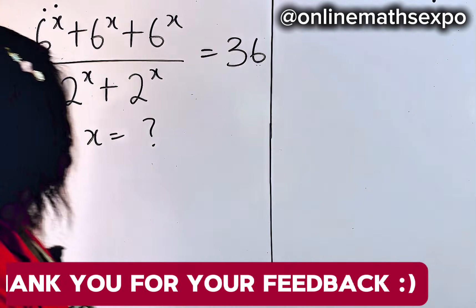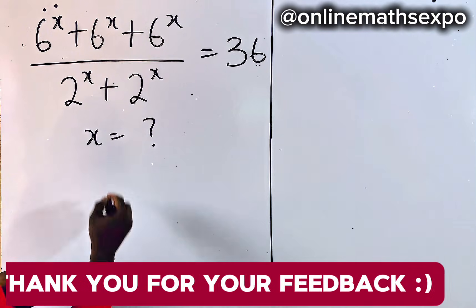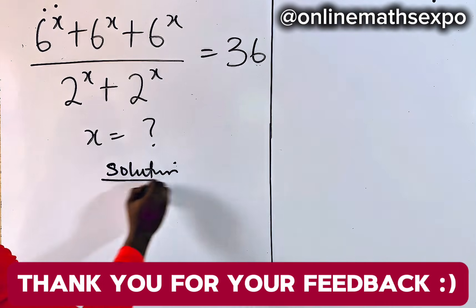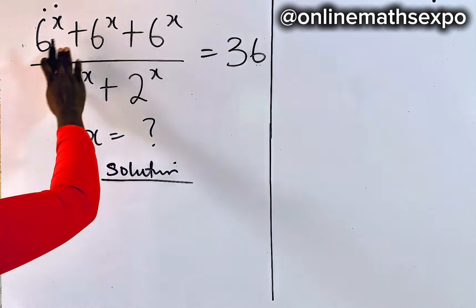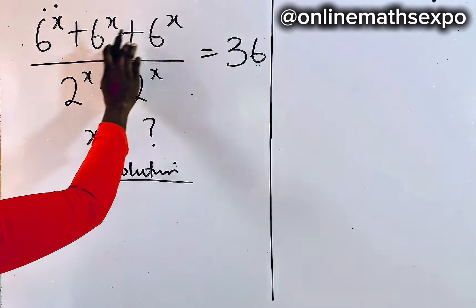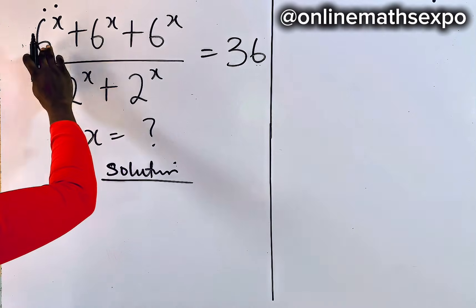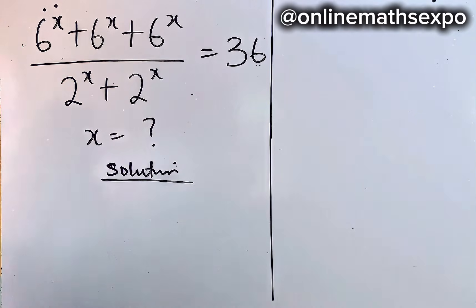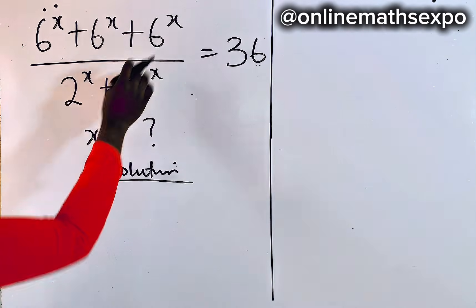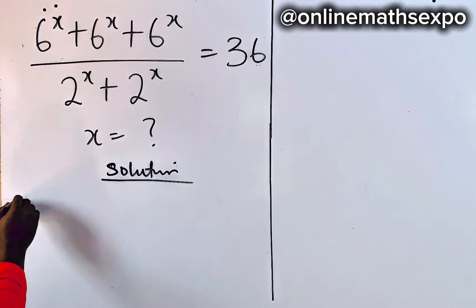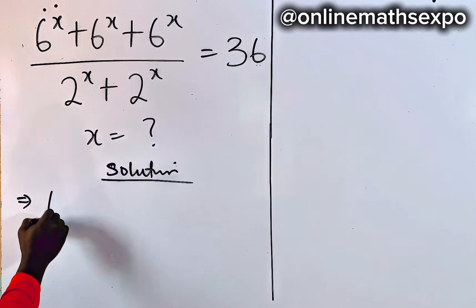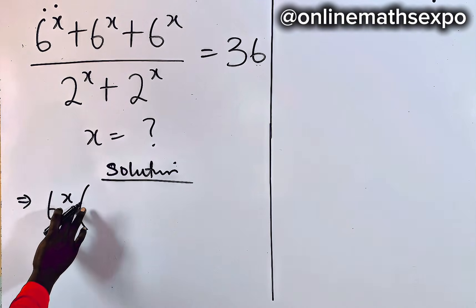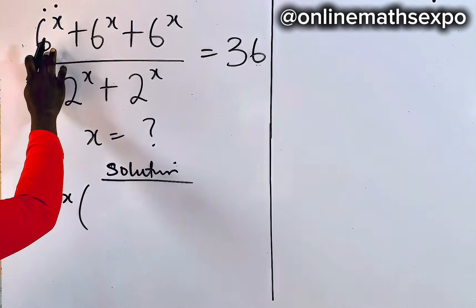So we're going to begin with our solution. This is what we have. If you look at this, you observe that the 6 to the x-power is repeated. So what we just need to do is to factor it out — we factor 6 to the power of x out, and use it to divide each term.